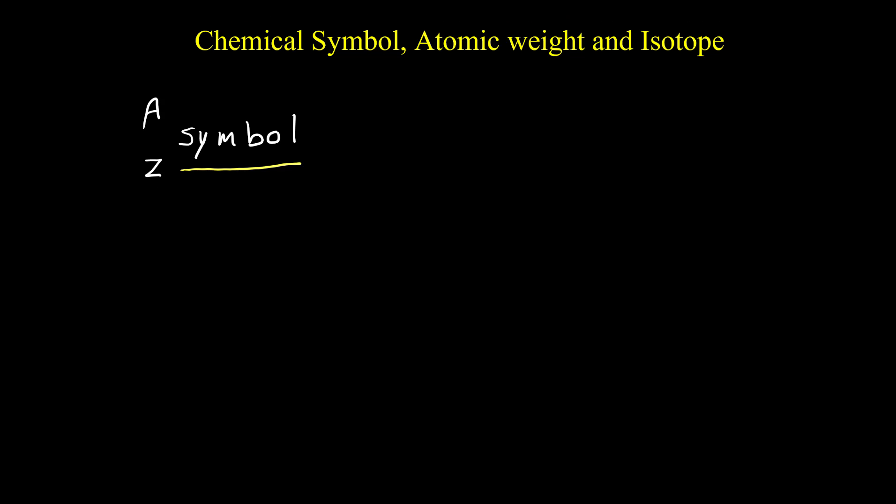The symbol for an element is derived from the name of that element. The symbol can be one letter, two letters, or sometimes three letters — the three-letter symbols are for recently discovered elements in the laboratory. For example, the symbol for hydrogen is H, for carbon is C, and for oxygen is O.